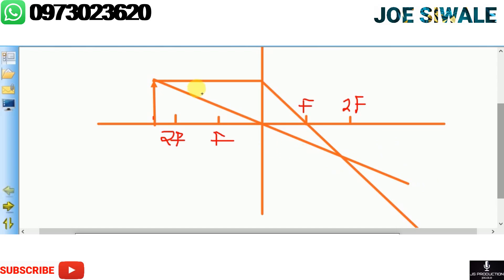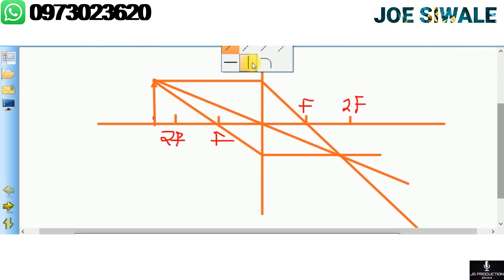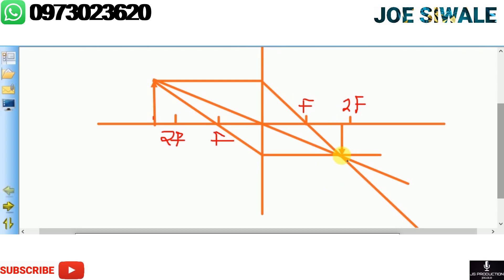For the third ray, it passes through the focal point on the object side and then refracts at the lens to travel parallel to the principal axis. We've now identified where the image is — it's where all three rays converge. The image is formed where all three rays meet, and since the rays converge at the bottom, the image will be upside down.